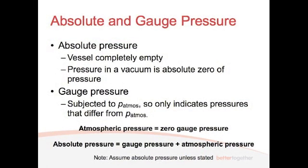And so as I said, absolute pressure, if you've got a vessel, it's completely empty. The pressure inside a vacuum is zero. But gauge pressure is when it's subjected to the atmospheric pressure. And so it only indicates pressures that differ from atmospheric pressure.